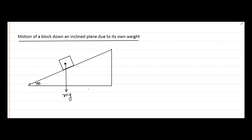What would happen if we have a block placed on an inclined plane and it is sliding downwards due to its own weight? That's the question for discussion in this video. I've shown here an inclined plane with an angle theta and we have a block placed on this. Let's say to begin with that this block is in equilibrium position.